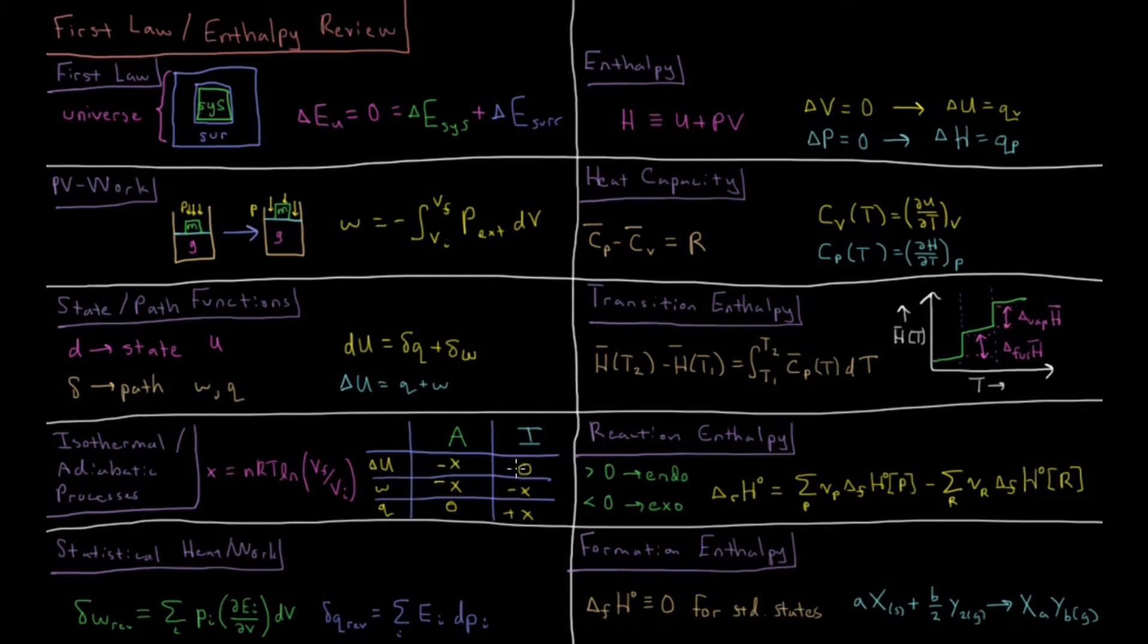In isothermal processes, the temperature stays the same. We have the work done is minus X, but we include an amount of heat plus X that cancels out the amount of energy we lost through work, such that our internal energy and thus our temperature of the gas stays constant.